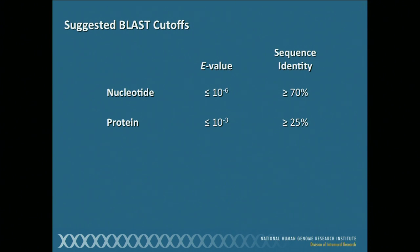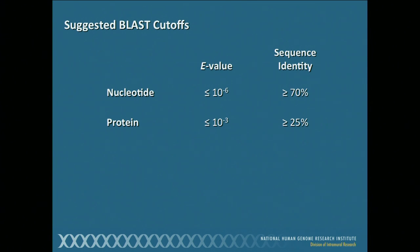Here are the rules — second cheat sheet of the day, put a star on this one as well. Here are the rules for the E-value and the sequence identity for both nucleotides and proteins. Now, these are guidelines, okay? These are not holy rules. These are really just a starting point. Don't use these cutoffs blindly — this is just some place to start until you get more comfortable with using BLAST.